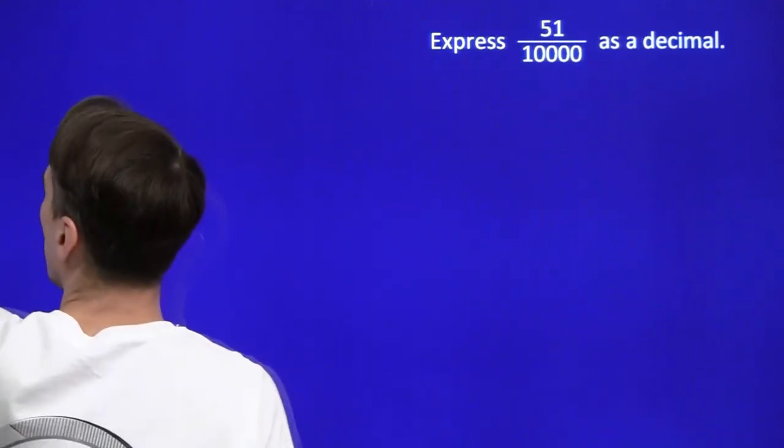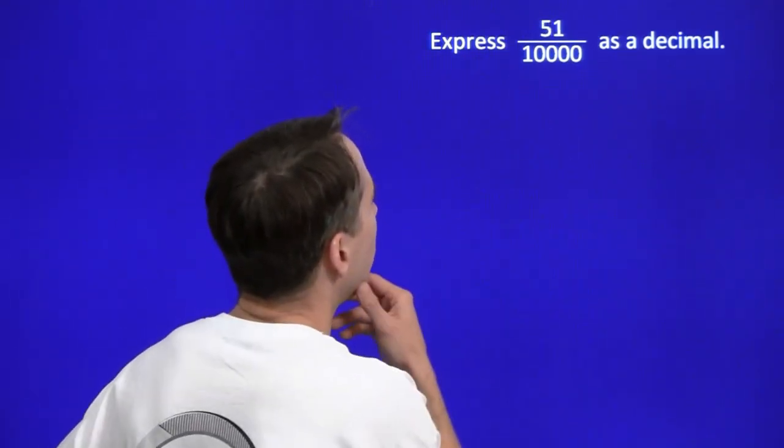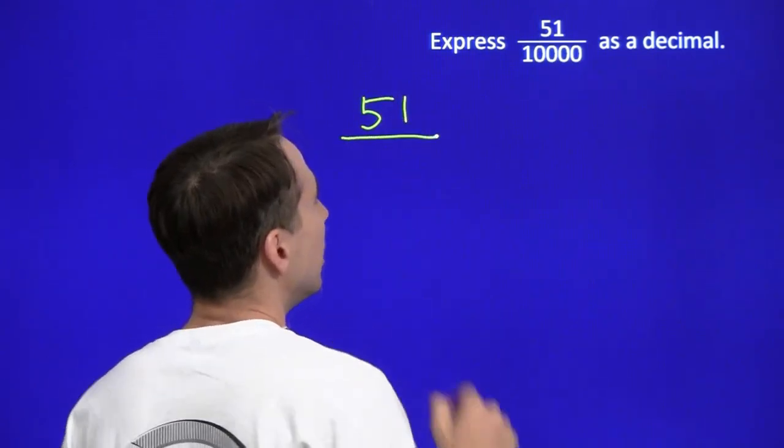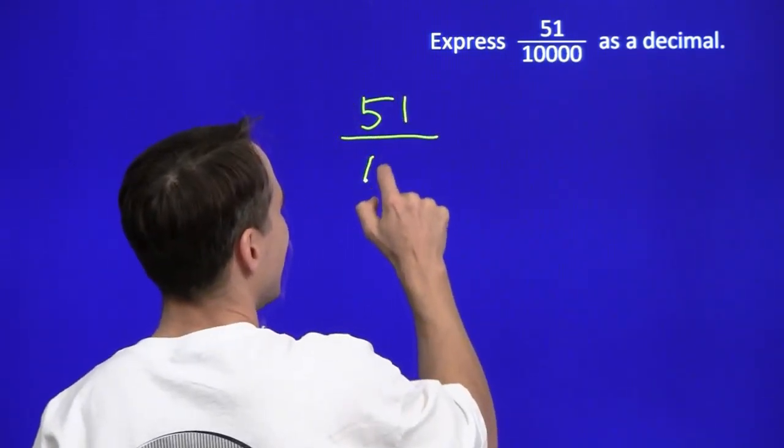Let's try one more. We've got 51 over 10,000 this time. Again, we know how to handle this. 10,000, four zeros, that's just 10 to the fourth.